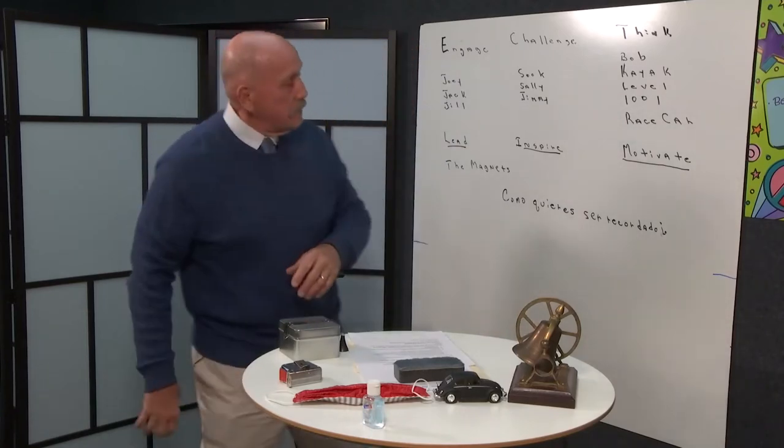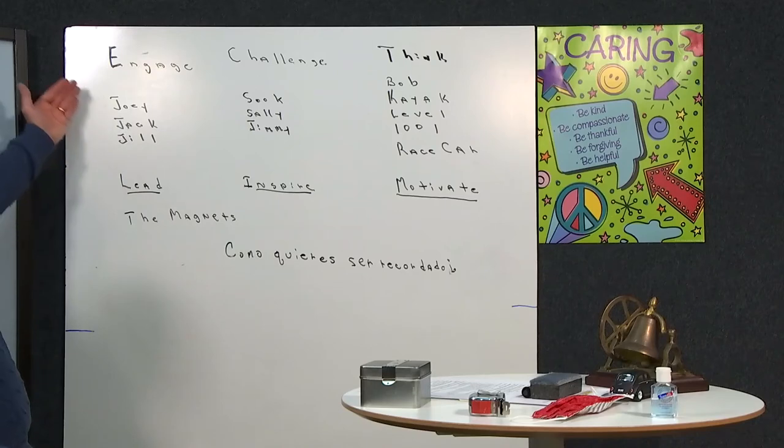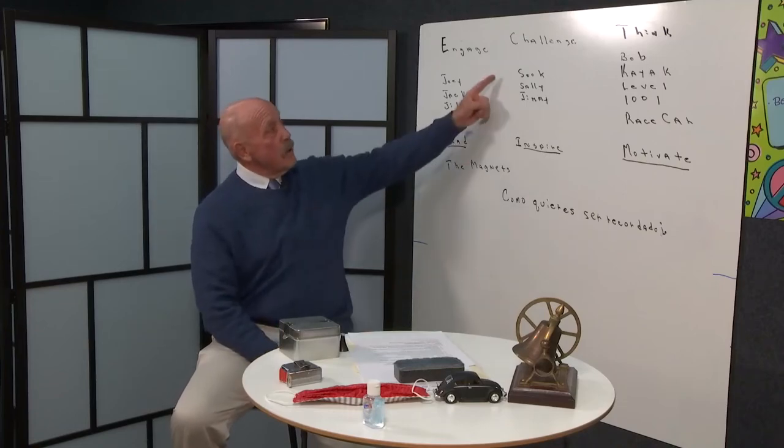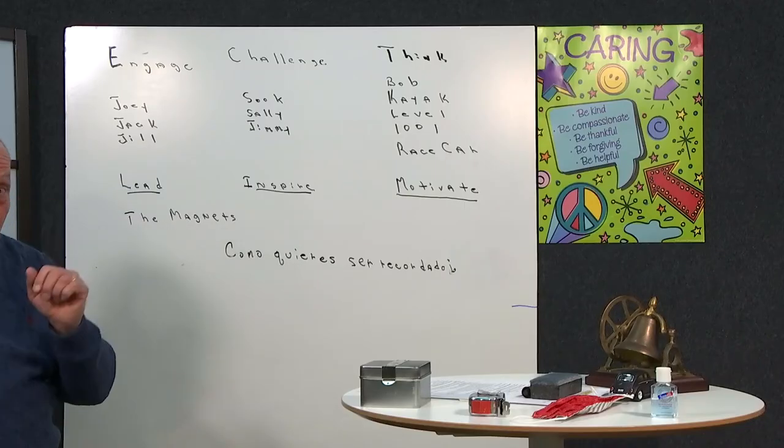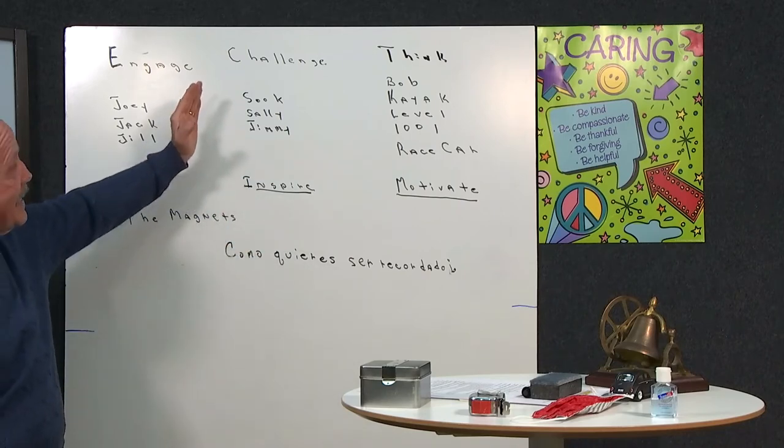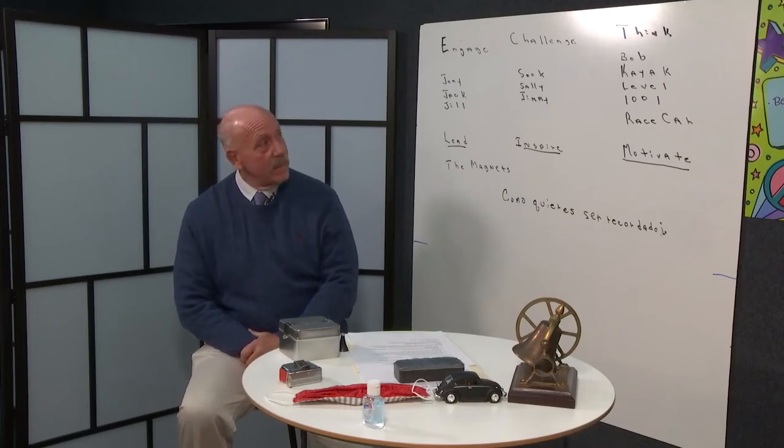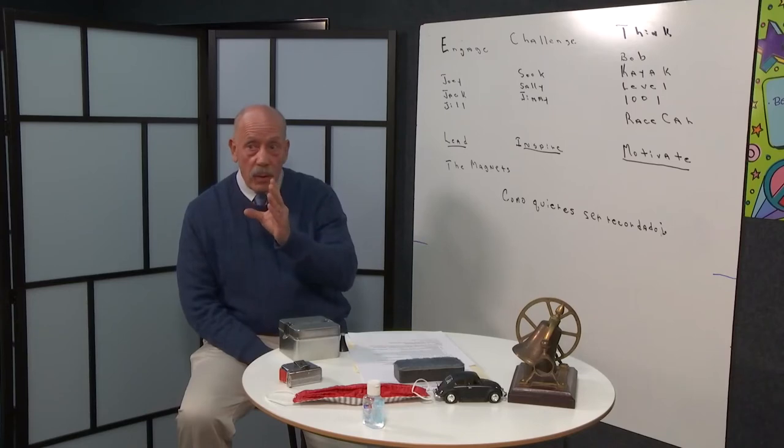So I ask you, take a look at Joey, Jack, and Jill. I wonder what that has to do with the symbol for caring. We'll soon see. How about Sook, Sally, and Jimmy? Now, you're from the Eastern Shore or you live on the Eastern Shore. You should definitely know what a Sook is, what a Sally is, and what a Jimmy is. But then again, you might not. It's all part of the learning curve. Oh, and by the way, what do Bob Kayak, Level, 1001, and Race Car have in common? Because we're all driving toward a concept here.